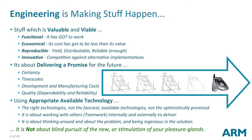We have to go back and ask ourselves what being an engineer is all about. Engineering is about creating stuff. Technology is a specific example of something you can use to create that stuff, and electronics is just a technology. The thing that measures your success as an engineer is that what you make, what you design, what you create, is valuable and viable. It's got to work, be economical, be producible, be reproducible, and be innovative — better than the competitive thing.